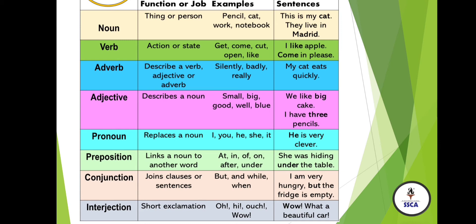Preposition links a noun to another word. For example: at, in, off, on, under, after. Example sentence: 'She is hiding under the table.' Here, 'she' is the pronoun and 'table' is the noun, and 'under' is the position where she is hiding. In this way, you can say preposition links a noun or pronoun to another noun.